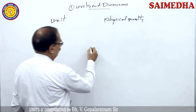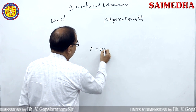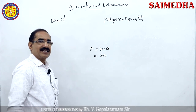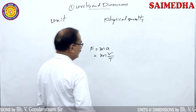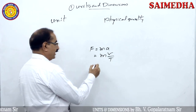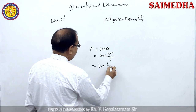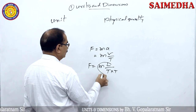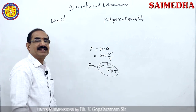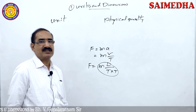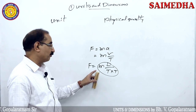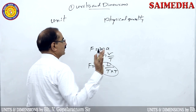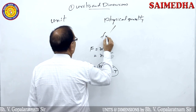Take a physical quantity like force: F equals ma, mass into acceleration. Acceleration can be written as velocity by time, and velocity as displacement by time. We cannot break these further because mass, length, and time are independent physical quantities — they do not depend on any other physical quantity. Such independent physical quantities are called fundamental physical quantities.